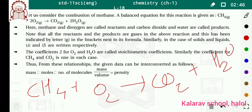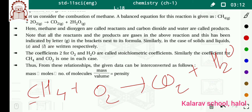First of all, jo reaction hai, chemical reaction ko balance kaise karte hain? Pehle aapko pata hona chahiye ki hamaari product kaun si hai aur hamaara reactant kaun sa hai. In this reaction, CH4 and O2 are our reactants, and CO2 plus H2O are our products. In the reactant side, one carbon is present, and in the product side also, only one carbon is present — so the number of carbon atoms is balanced.